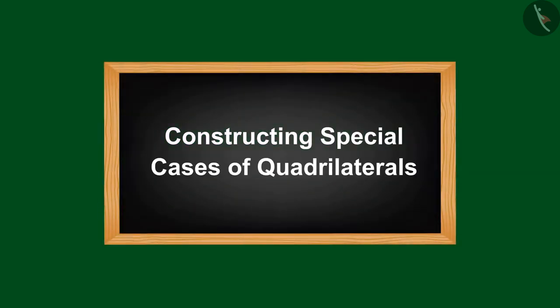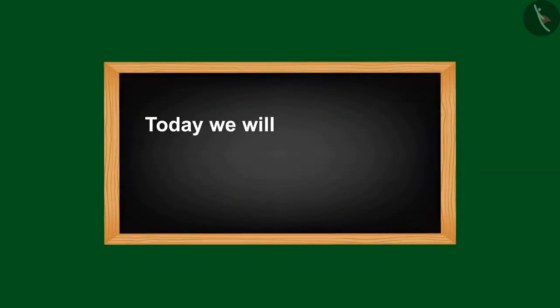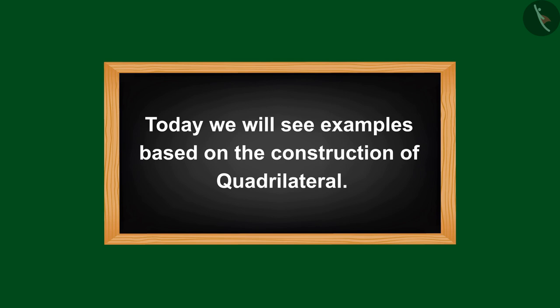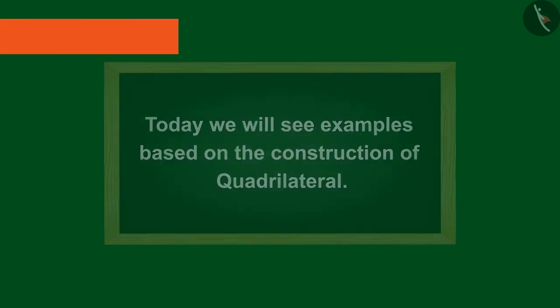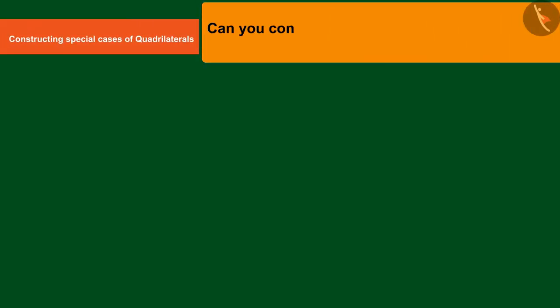Welcome all of you to this video. Today we will see examples based on the construction of quadrilaterals. Can you construct a rhombus BEND with diagonal BN equals 5.2 centimeters and DE equals 6.4 centimeters?